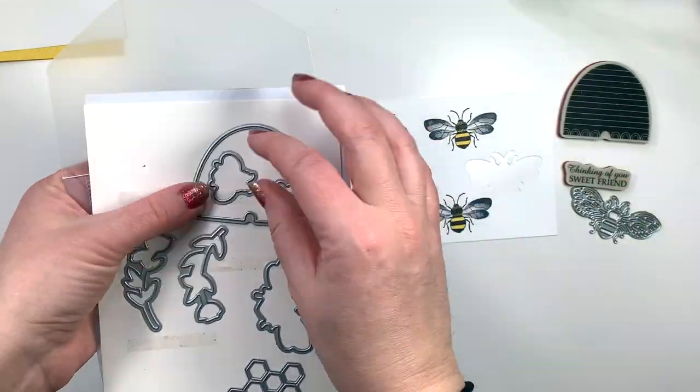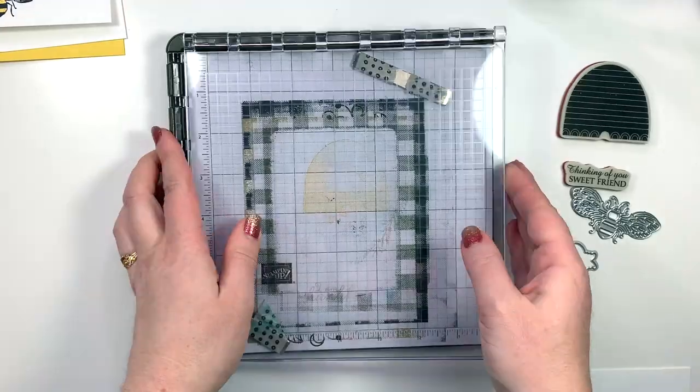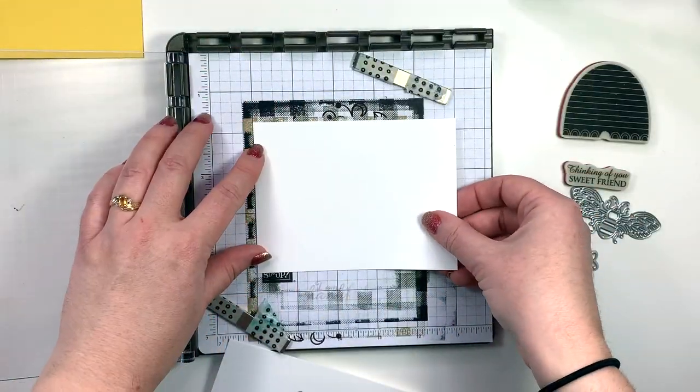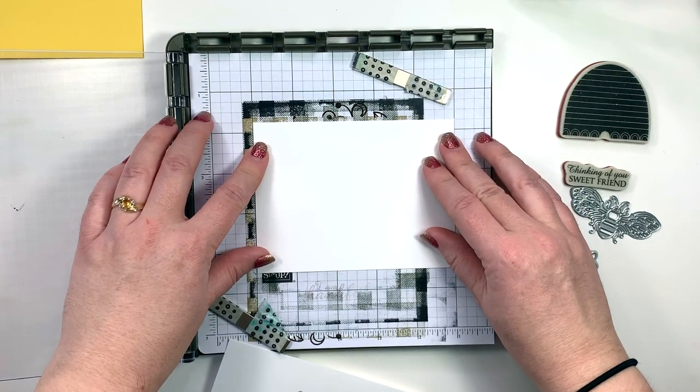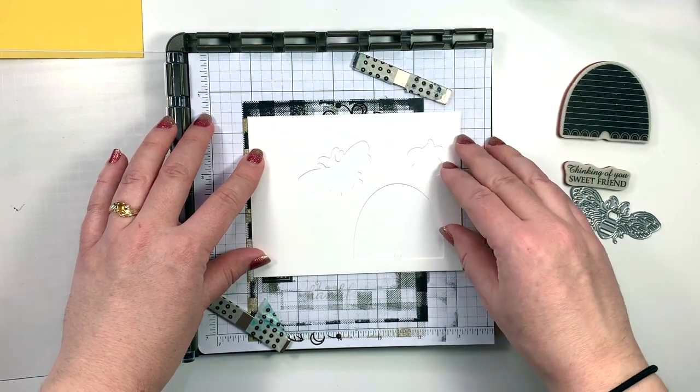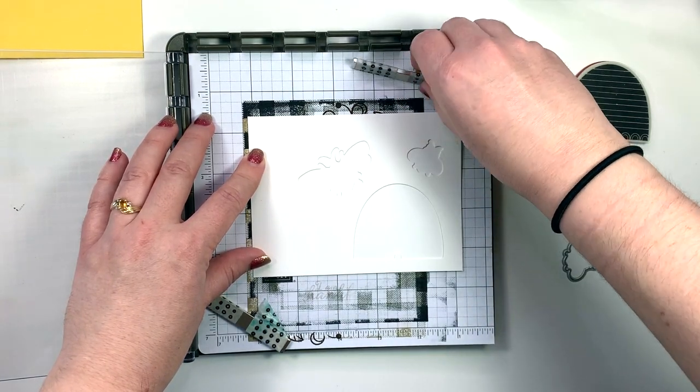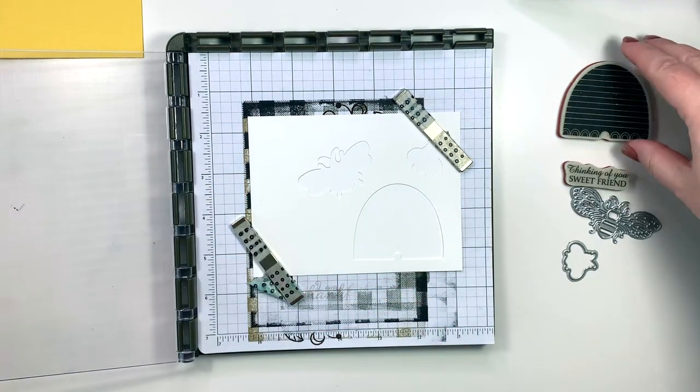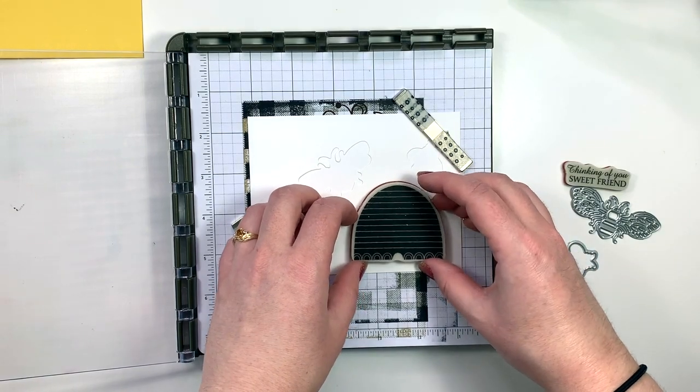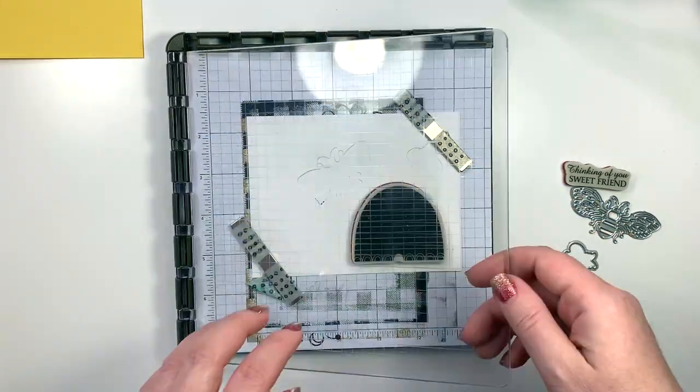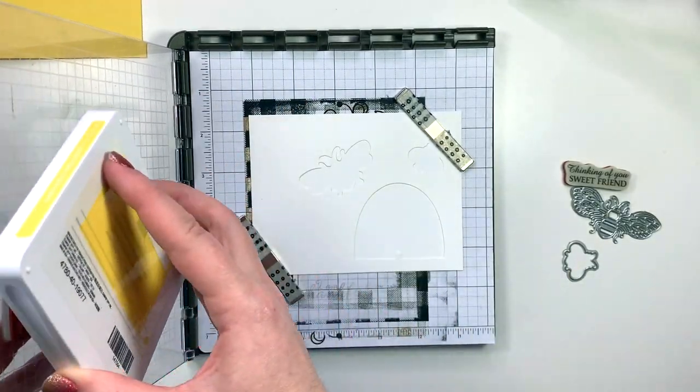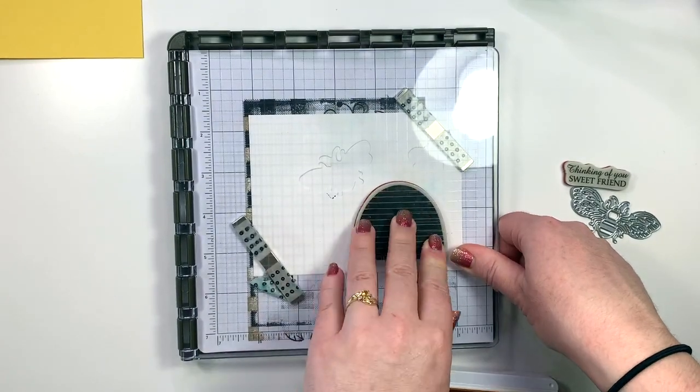I am using the hive stamp along with the thinking of you sweet friend stamp and I'm going to be using the stamparatus to position my hive into the cutout of this scrap piece of paper. I made several cards using this bundle because it's amazing and I really highly recommend it. I have this scrap piece of paper that I cut out a few images from and I wanted to use it on a card, so I decided to play around with this and just wanted to see where it would take me.